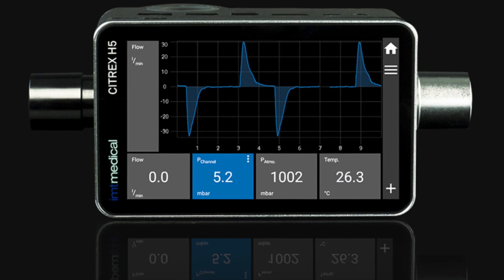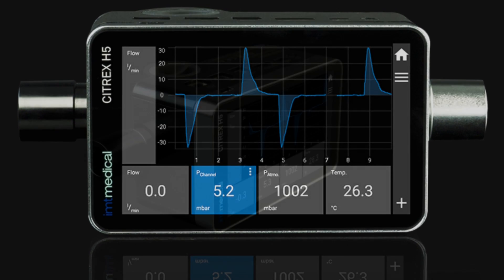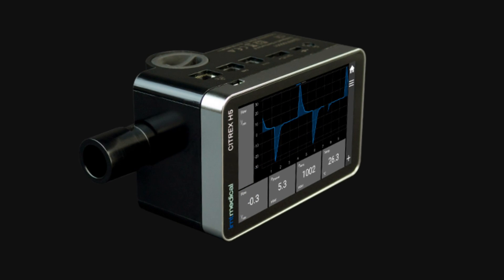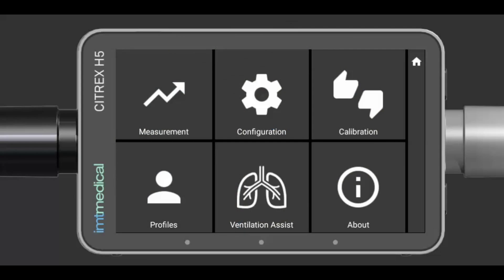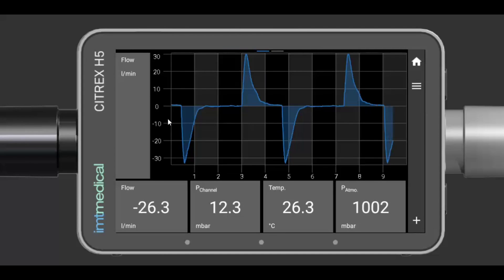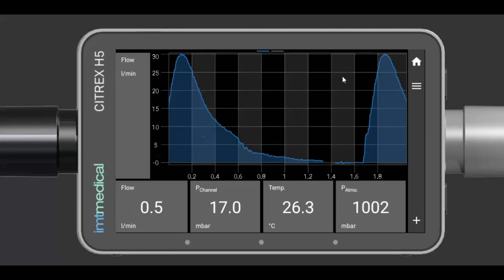Citrex H5, the best mobile gas analyzer in its class. The ideal all-in-one testing device for biomedical engineers, independent service organizations, anesthesia device and ventilator manufacturers. Citrex H5 is the gas flow and pressure measurement instrument with the most advanced user interface.